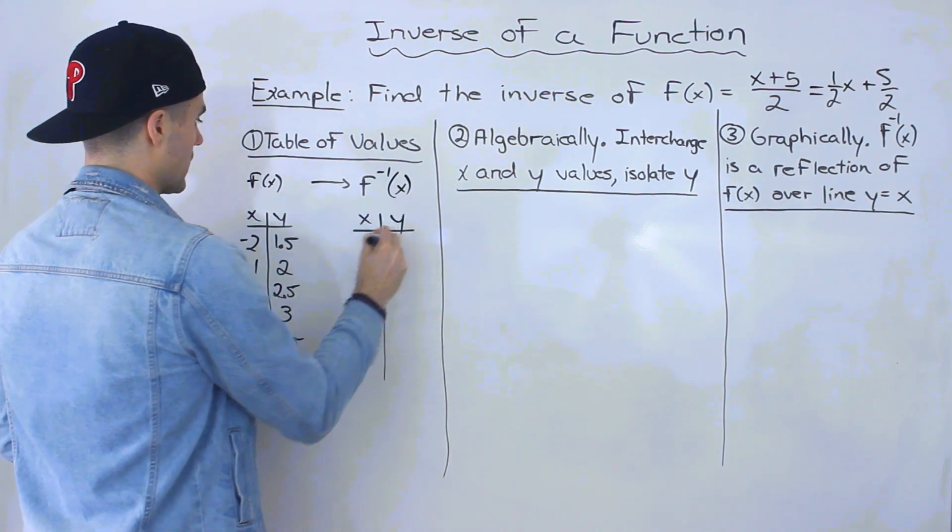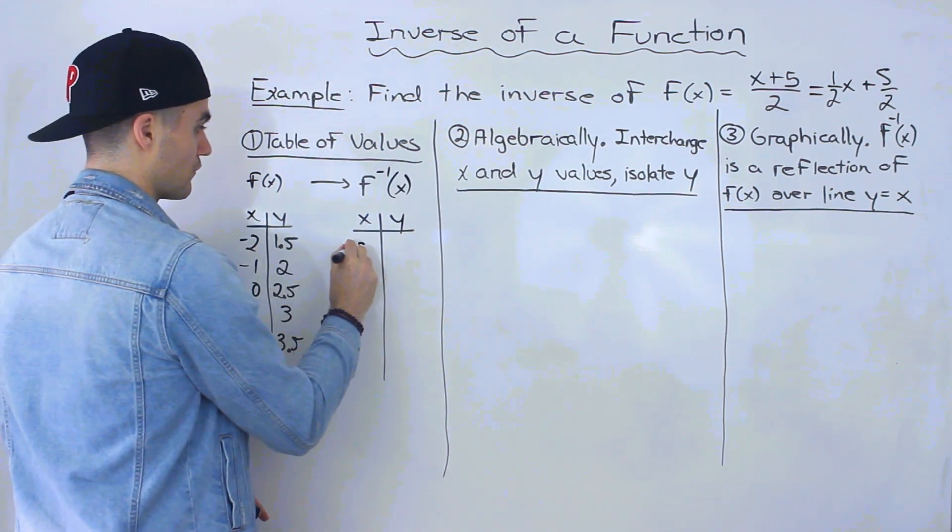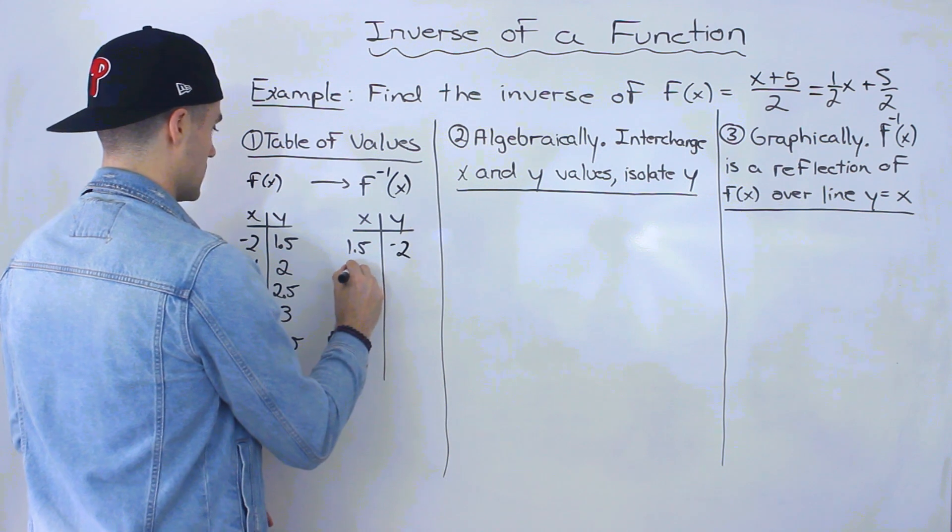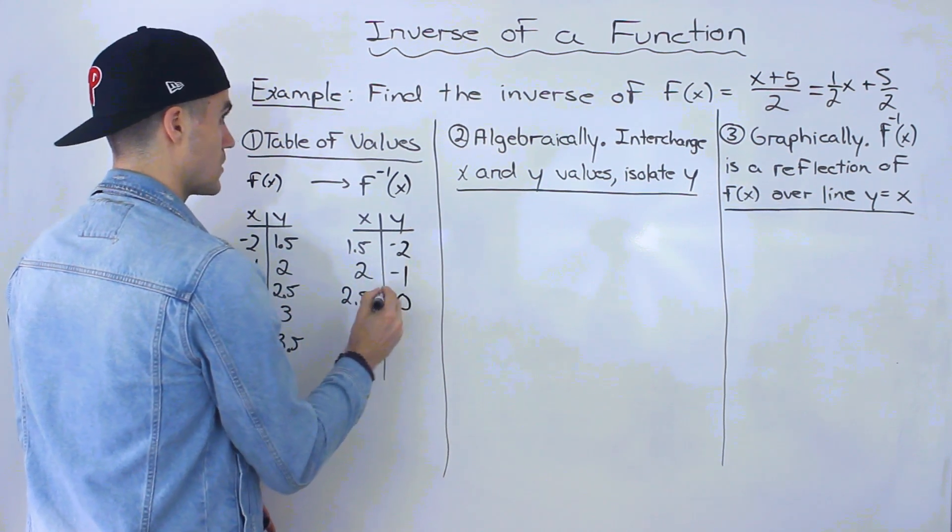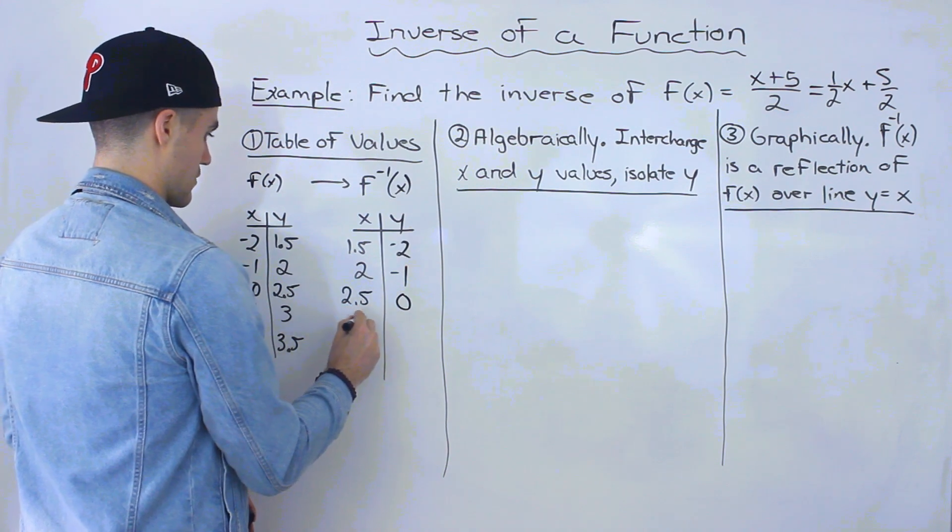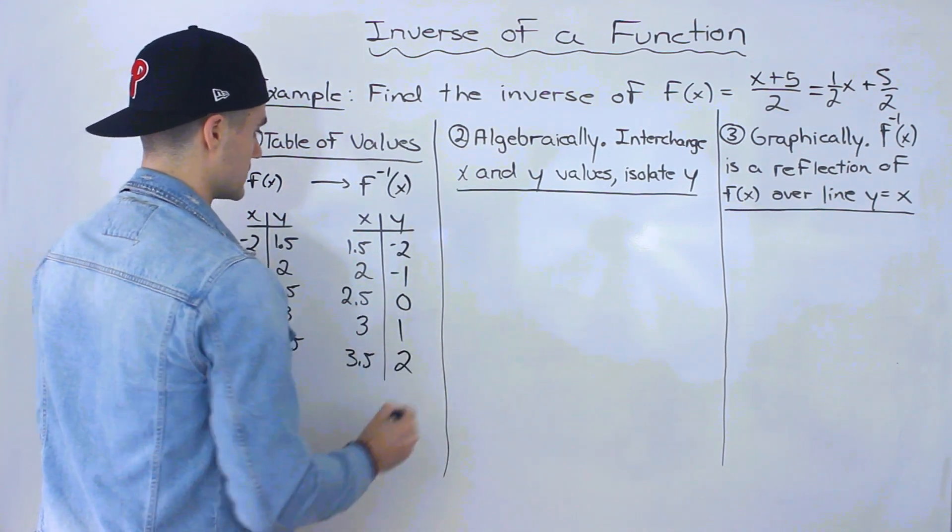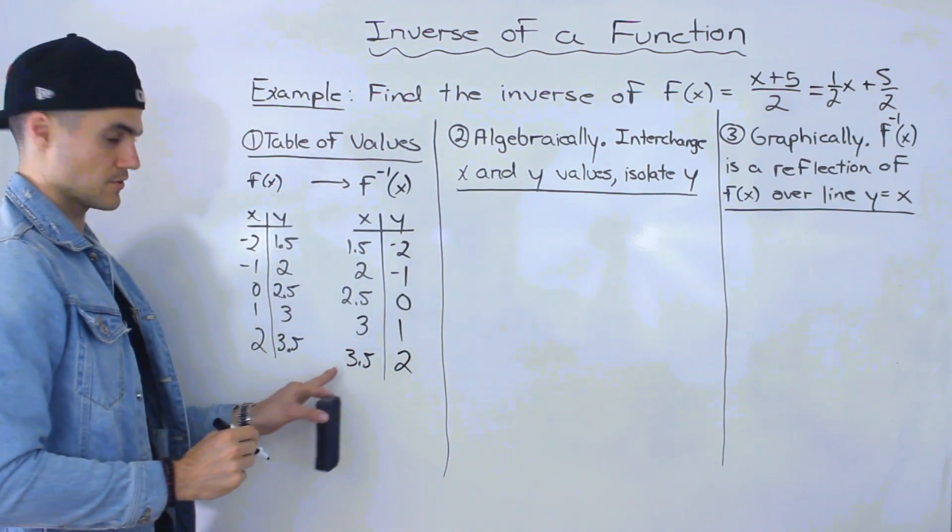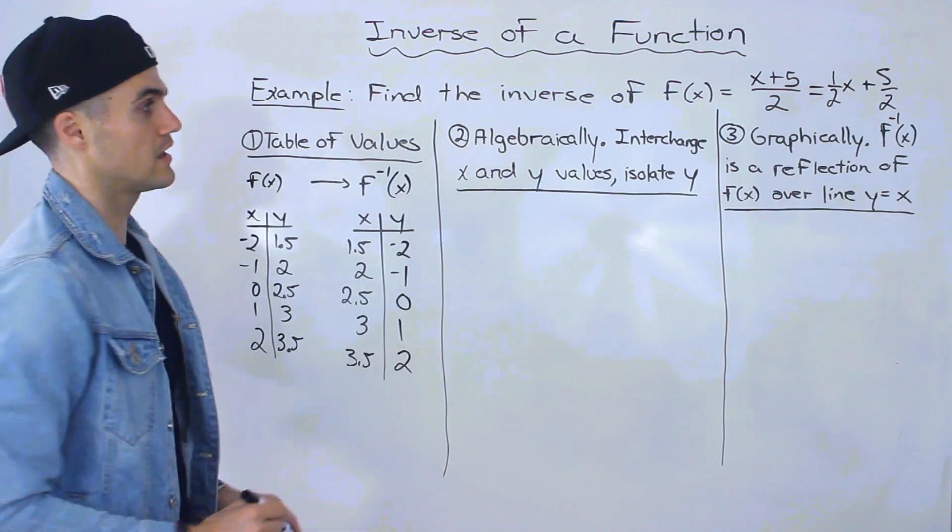So now let's get the table for the inverse. The table for the inverse would just be all of these reversed. So it'd be 1.5 and negative 2, 2 and negative 1, 2.5 and 0, 3 and 1, and then 3.5 and 2. So this would be the table of values for the inverse. And we're actually going to graph this in number 3.